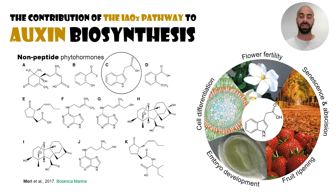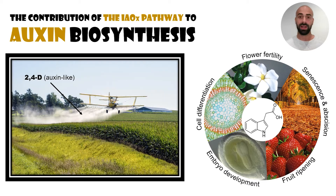Oxyn is a phytohormone involved in nearly every aspect of plant's life, from embryo development to food ripening. Importantly, it's not only about having oxyn but having it in the right place at the right time and at proper amounts. In fact, artificial oxyn 2,4-D is extensively used as a herbicide to get rid of undesired weeds, and I bet that your favorite weed-and-feed product you use for your lawn contains 2,4-D.